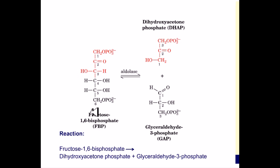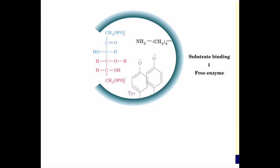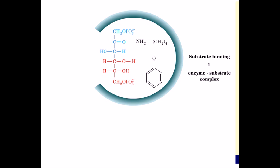The substrate is fructose 1,6-bisphosphate, which is cleaved to generate two 3-carbon molecules: dihydroxyacetone phosphate (DHAP) and glyceraldehyde-3-phosphate (GAP). In step 1, the substrate fructose 1,6-bisphosphate binds to the enzyme.